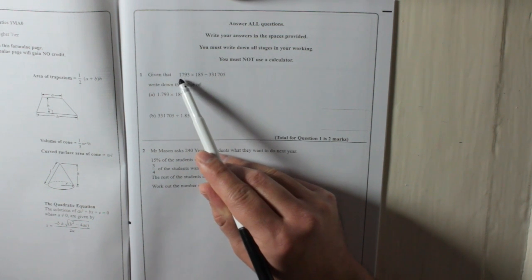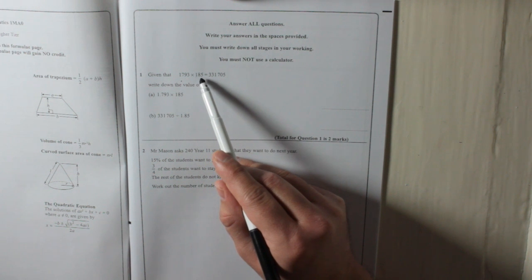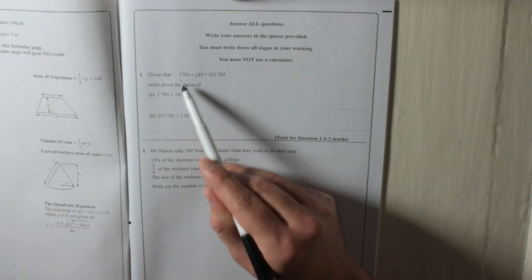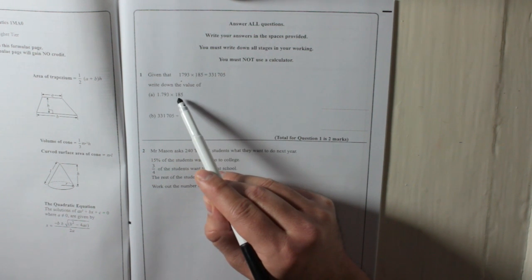If 1793 multiplied by 185 is this, then what's the difference? Look at the difference. The only difference is 185. 185, they're both the same.